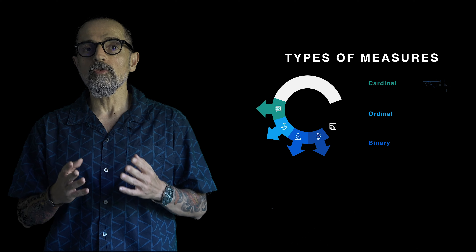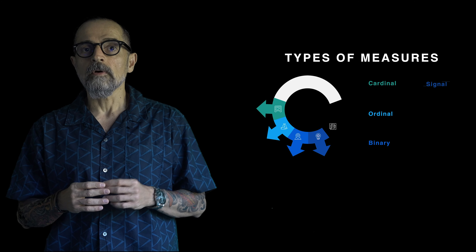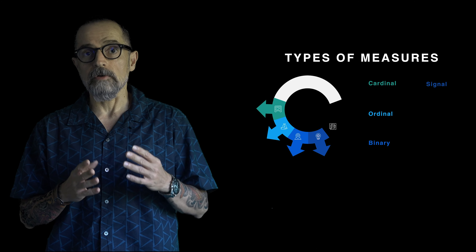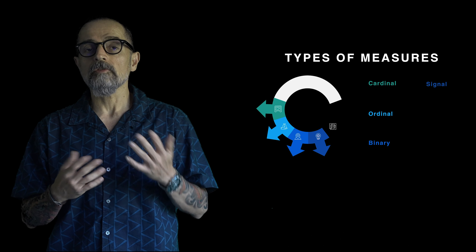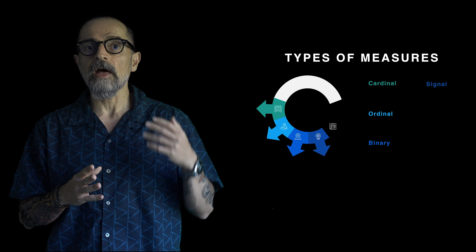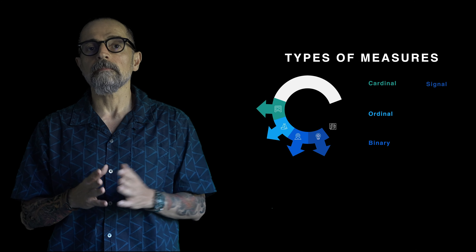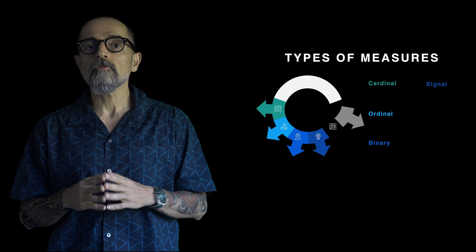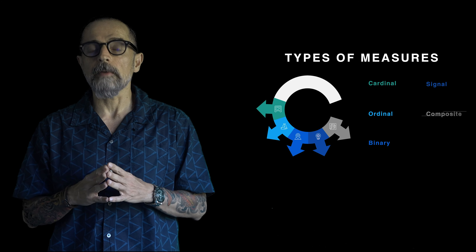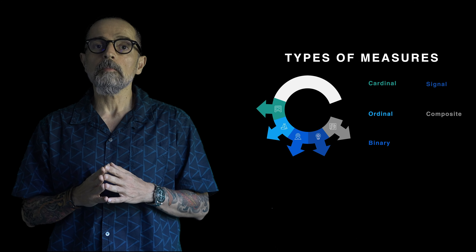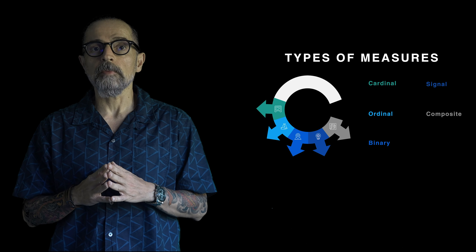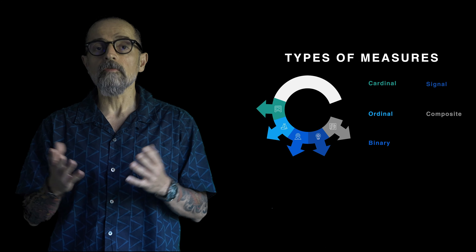You can also use a signal to identify the respect for a certain deadline — for instance, yes, the law was approved by the Parliament and it was approved until the end of 2020. And finally, you can use composite indicators, the ones that combine different cardinal measures. A typical composite indicator is, for instance, the Human Development Index or the Rule of Law Index.